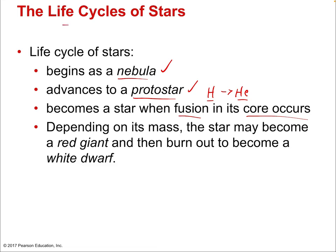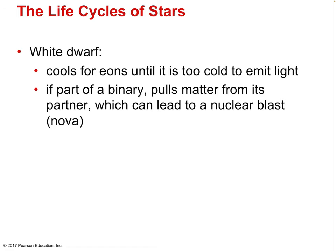Depending on its mass, a star may become a red giant, then burn out to become a white dwarf. Smaller mass stars — the lower half of the main sequence, including our sun — follow this path. A white dwarf cools for eons — tens or hundreds of billions of years — until it no longer emits light, becoming a giant exotic crystal the size of a planet. In binary systems, a white dwarf can pull matter off its neighbor, creating a nova — a flash of light on the white dwarf's surface.